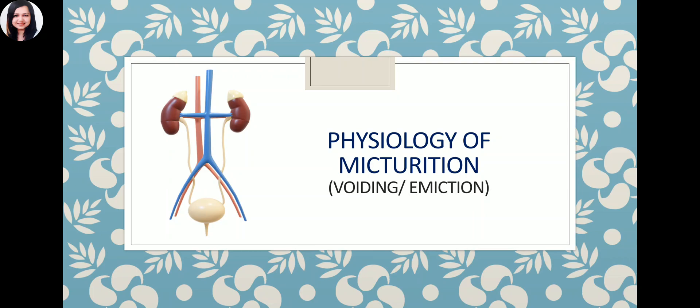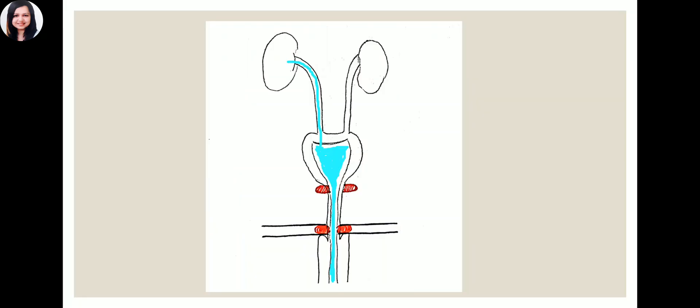Micturition is the process by which the urinary bladder disposes of urine through the urethra to outside the body. It is also known as voiding or emiction. The process of micturition is a coordination between the central nervous system, the autonomic nervous system, and the somatic nervous system. The kidneys form urine, which travels down the muscular tubes called ureters and reaches the bladder. The bladder stores urine, and when needed, the bladder muscle contracts to expel the urine through the urethra.